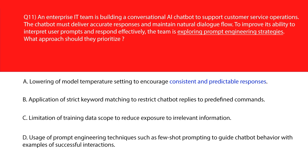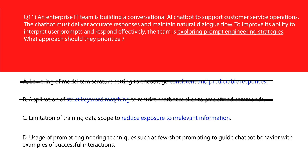Let's move to option B. B says application of strict keyword matching to restrict chatbot replies to predefined commands. Restriction to keywords limits flexibility and natural conversation flow — we'll delete this. We'll move to C. C says limitation of training data scope to reduce exposure to irrelevant information. Reduced data scope weakens contextual learning and adaptability. Wrong answer.